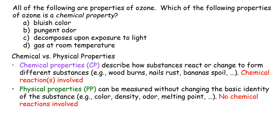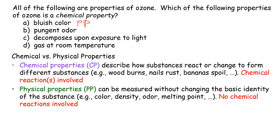Now let's look at the four different choices. Ozone has a bluish color. Bluish color is just a color, just like your t-shirt or your pants — there's no chemical reaction going on, so this is a physical property. Next, ozone has a pungent odor — it's how it smells, just a physical property. No chemical reaction involved, so that's also a physical property.